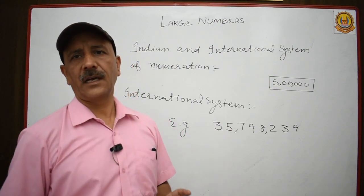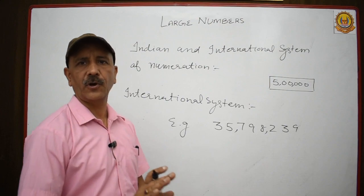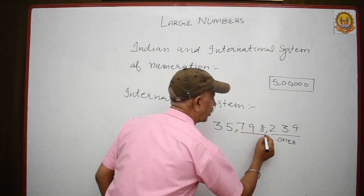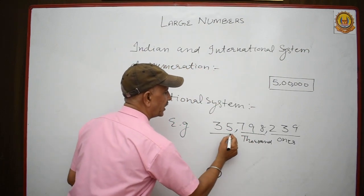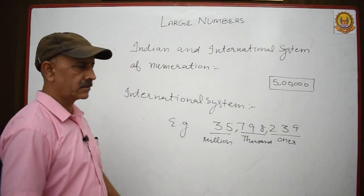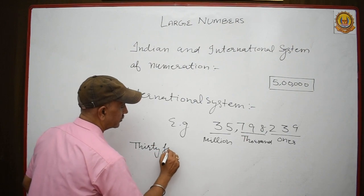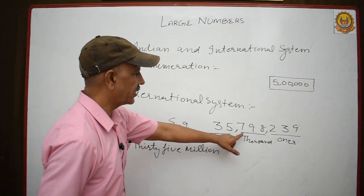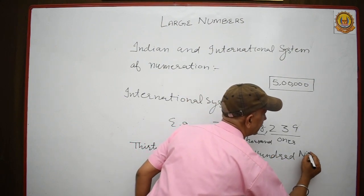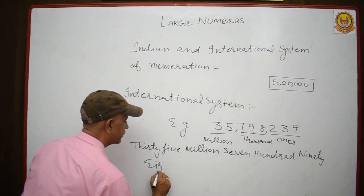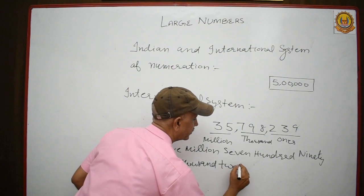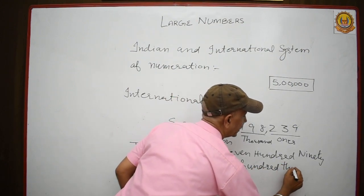Mind one thing: in the international system we don't use lakh or crore. This is the 'ones' period, this is 'thousands,' and this is 'millions.' So if you want to write the number 5,798,239 in words: thirty-five million, seven hundred ninety-eight thousand, two hundred thirty-nine.